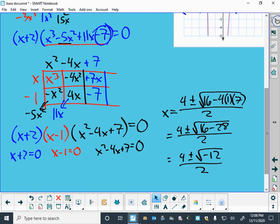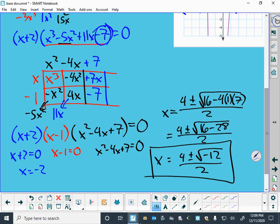So for now, we're just going to leave it like that and say that two of my roots are not real numbers. My other two roots are x equals negative 2 and x equals positive 1.